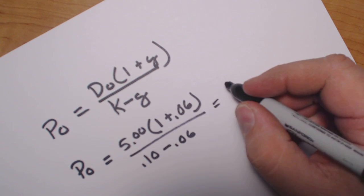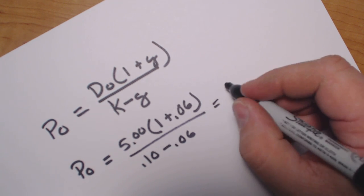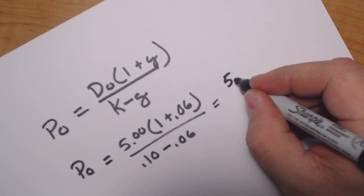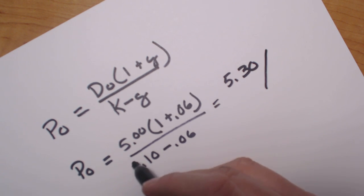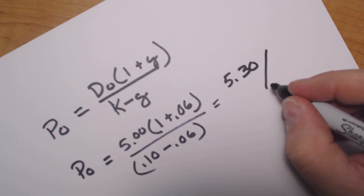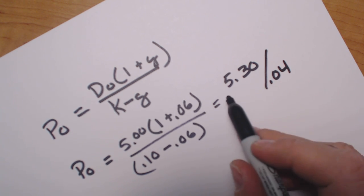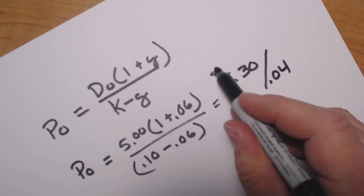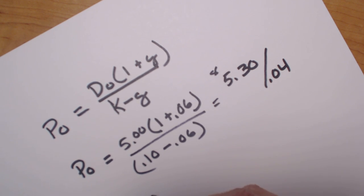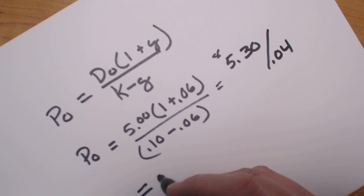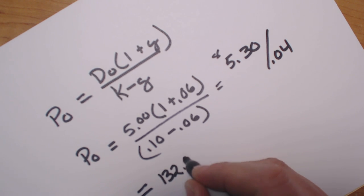We multiply 5 times 1.06, which equals $5.30. Then we subtract these two numbers: 0.10 minus 0.06 equals 0.04. Then we divide $5.30 by 0.04, and P0 equals $132.50.